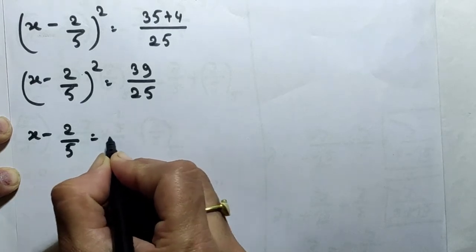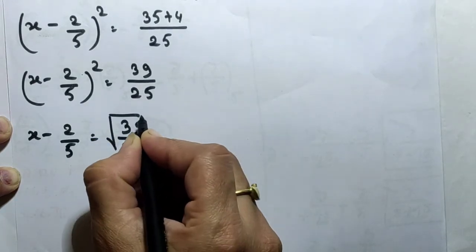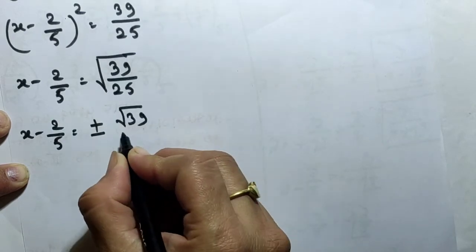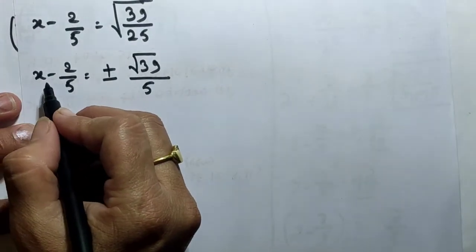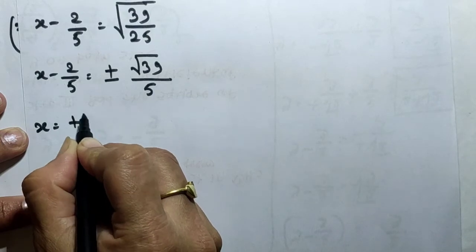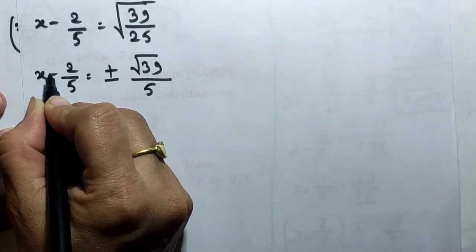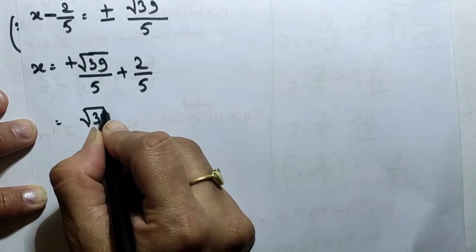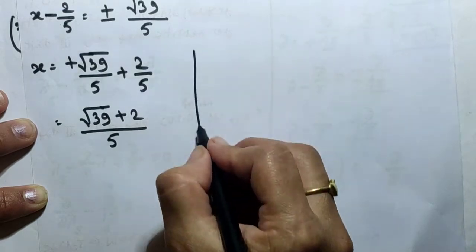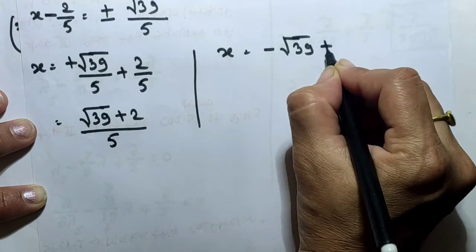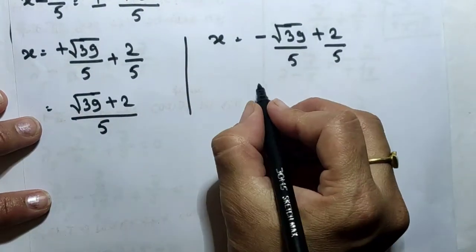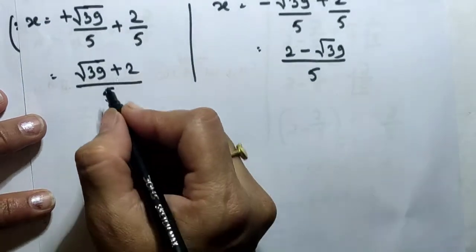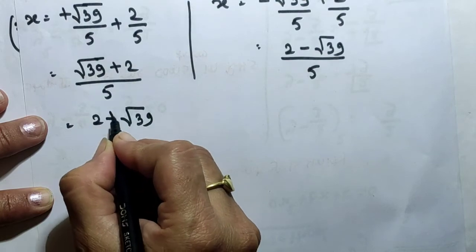Taking the square root: x − 2/5 = ±√39 / 5. Solving for x: the first root is x = (√39 + 2) / 5, that is (2 + √39)/5. The second root is x = (−√39 + 2) / 5, that is (2 − √39)/5. These are the two roots of the given quadratic equation.